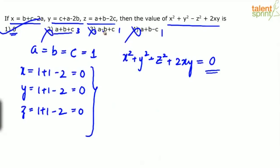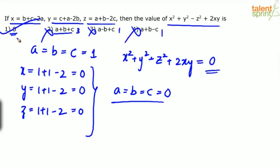But the problem with taking a equals b equals c equals 0 is that every option also results in 0 — option 2 (a+b+c = 0), option 3 (a−b+c = 0), option 4 (a+b−c = 0) — you'll be confused because you can't distinguish the correct answer. So you have to take different values. This intuition for choosing good substitution values comes with practice.